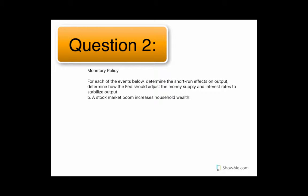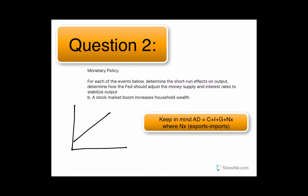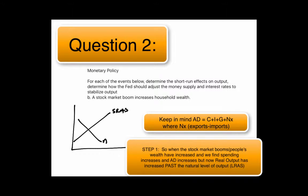Another example here. Now we want to find the short-run effects of a stock market boom increasing household wealth. So in that case, aggregate demand is going to increase from aggregate demand 1 to aggregate demand 2, and we want to try and stabilize this.